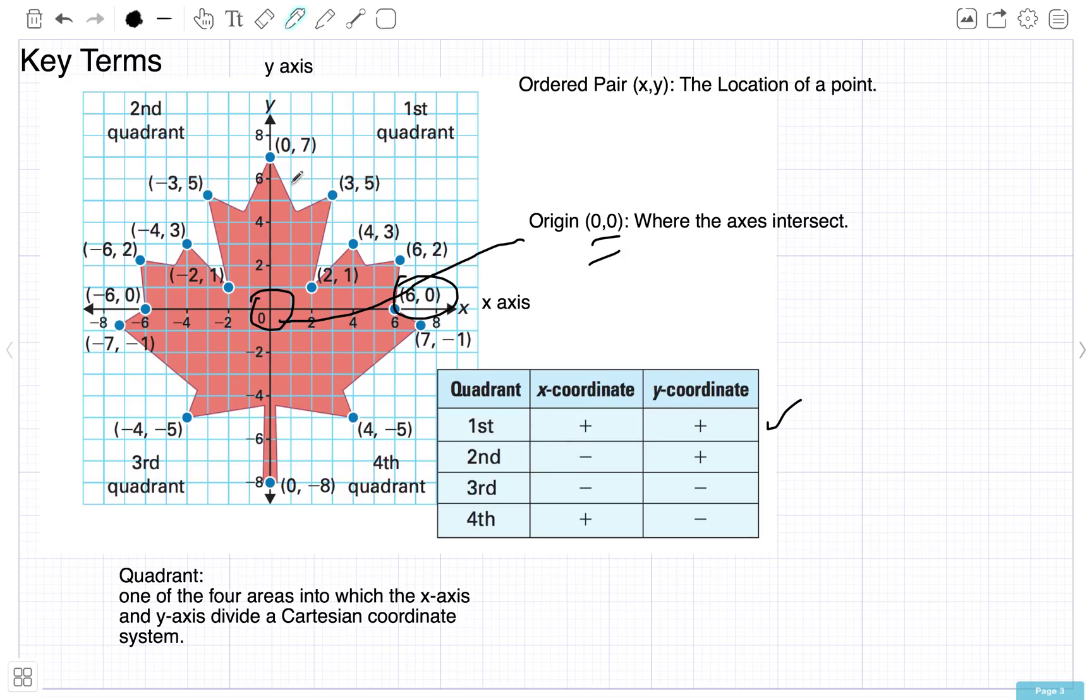Second quadrant, it's negative and positive. You see negative numbers here on x, then positive numbers on y. Next quadrant over, the third quadrant will be negative, negative. Both numbers will be negative. X first, negative numbers, then the y-axis, all negative numbers. Finally, the fourth quadrant, x is positive, then y is negative.